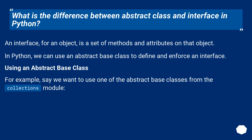What is the difference between Abstract Class and Interface in Python? An Interface, for an object, is a set of methods and attributes on that object. In Python, we can use an Abstract-based class to define and enforce an interface, using an Abstract-based class.